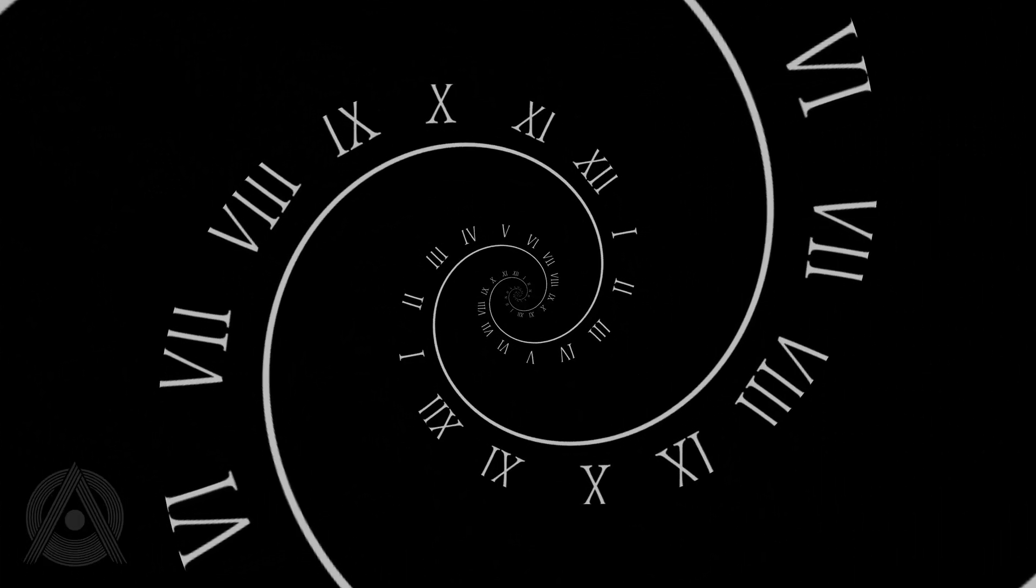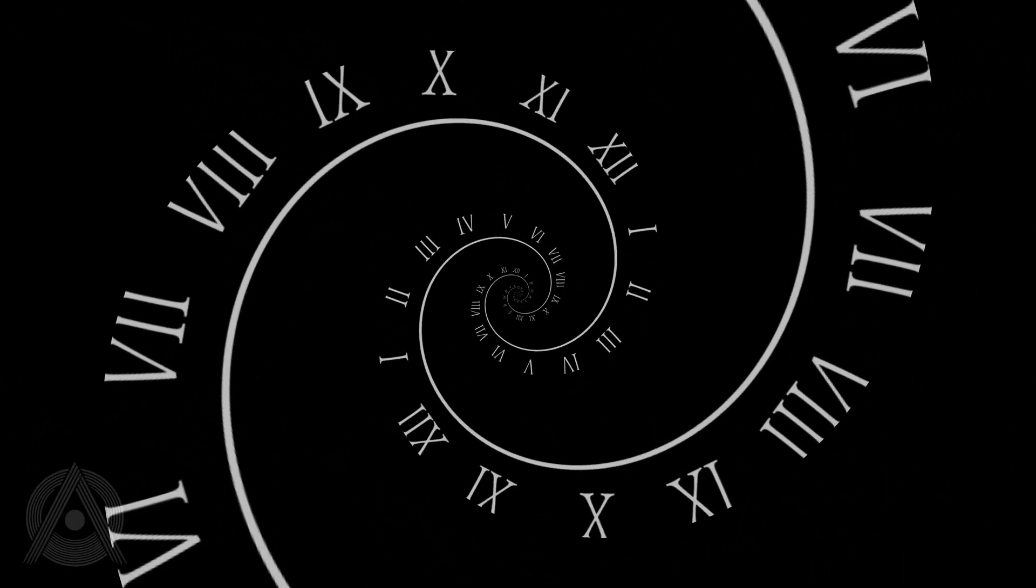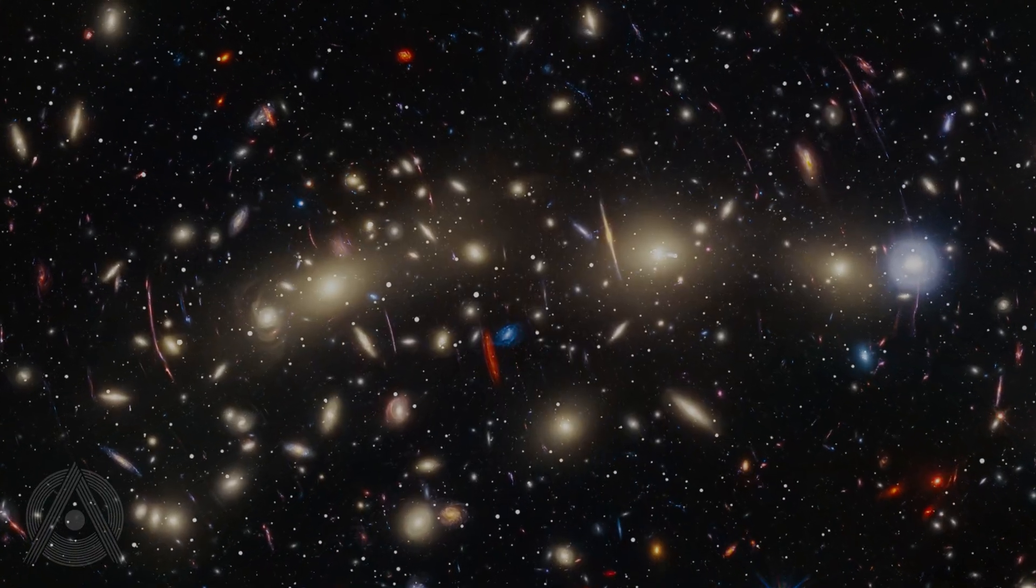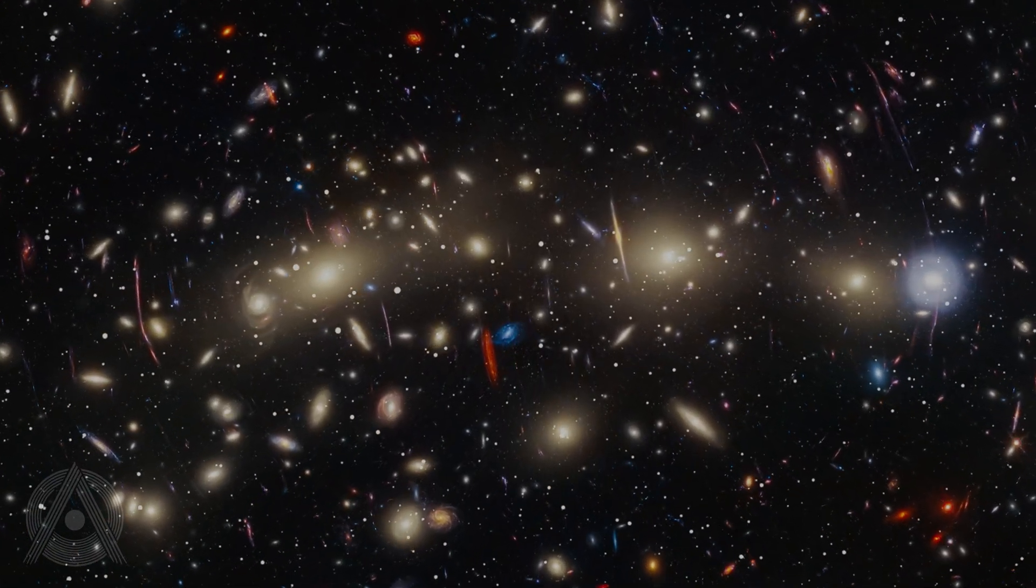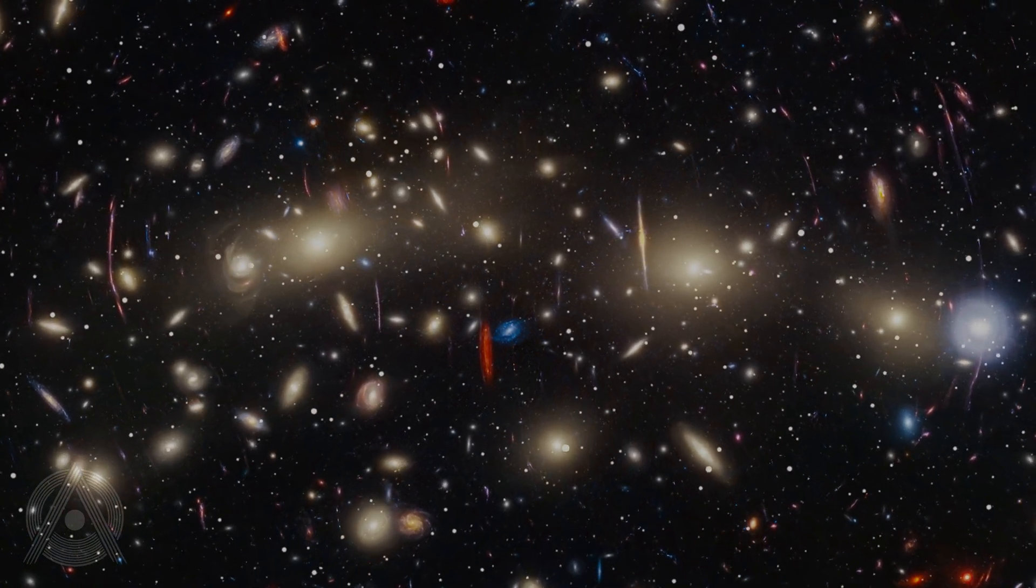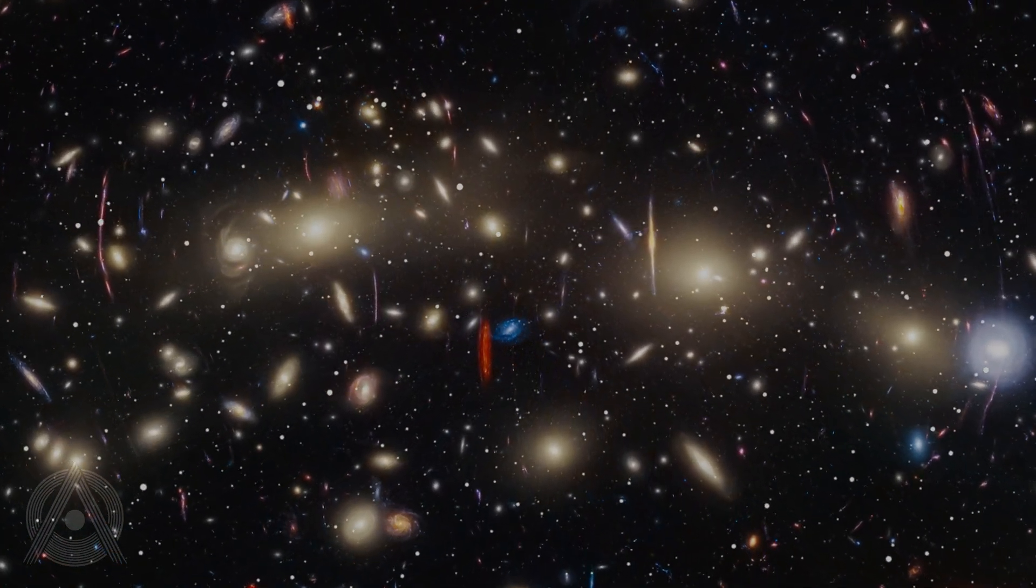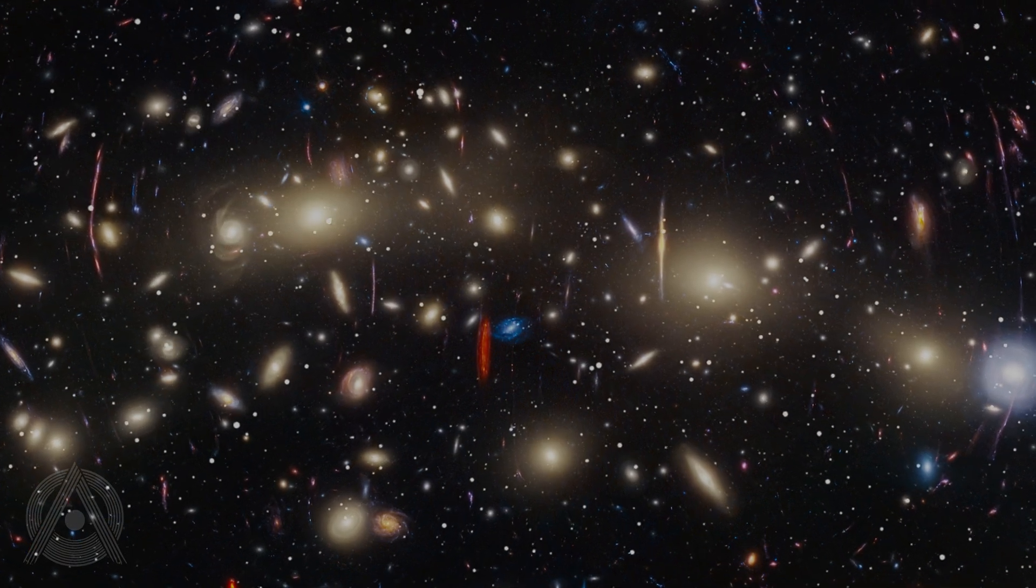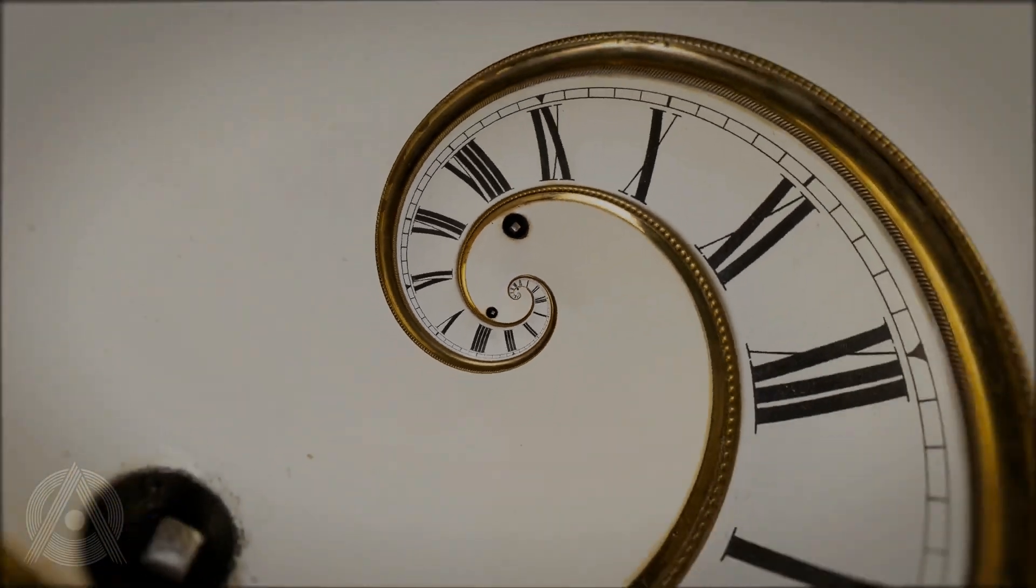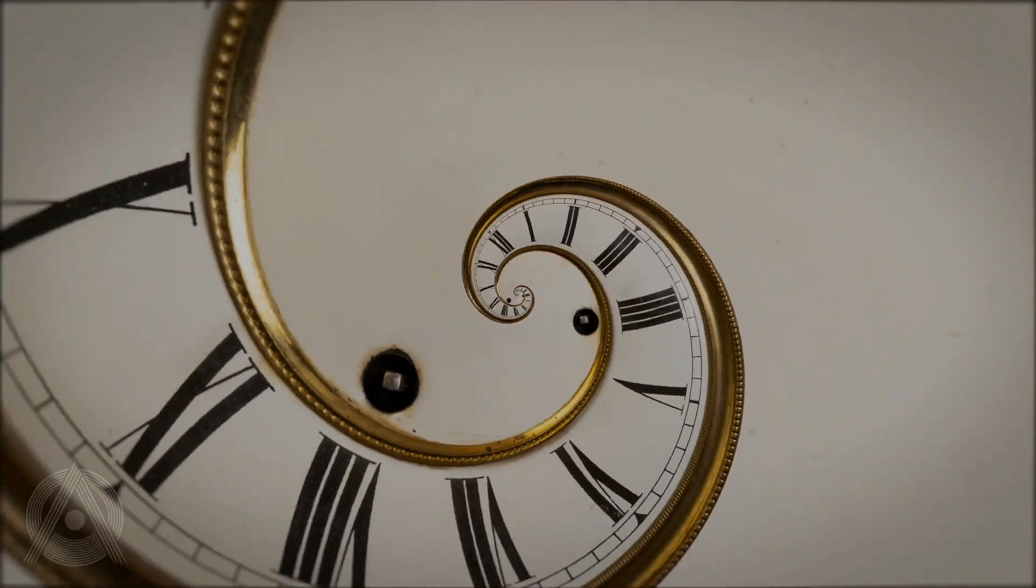If time doesn't exist yet, how could we possibly measure one minute before? When we say before the Big Bang, we're already using language that presupposes time. But time itself might be just another product of the Big Bang, not something that existed prior to it. It's like asking what's north of the North Pole. The question itself contains a fundamental misconception. And yet, various theories in modern physics hint at possibilities beyond our conventional understanding of time.